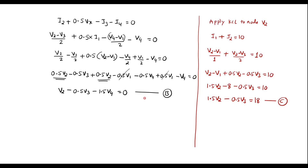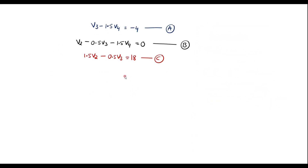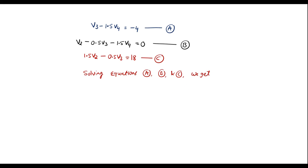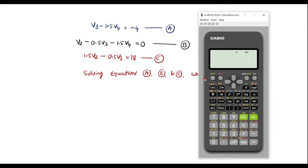So now we need to solve Equations A, B, and C to find the values of V2, V3, and V4. Let me use a calculator. To solve these three equations directly, we can use a calculator. Go to mode, choose equation — that is the fifth option — and since we have three unknowns, choose option two.